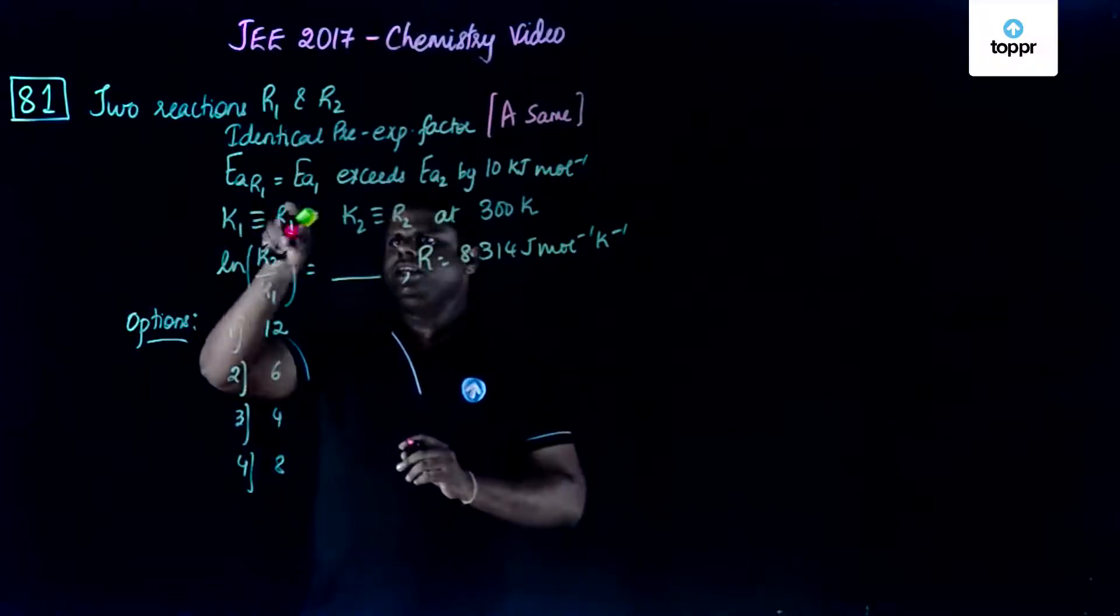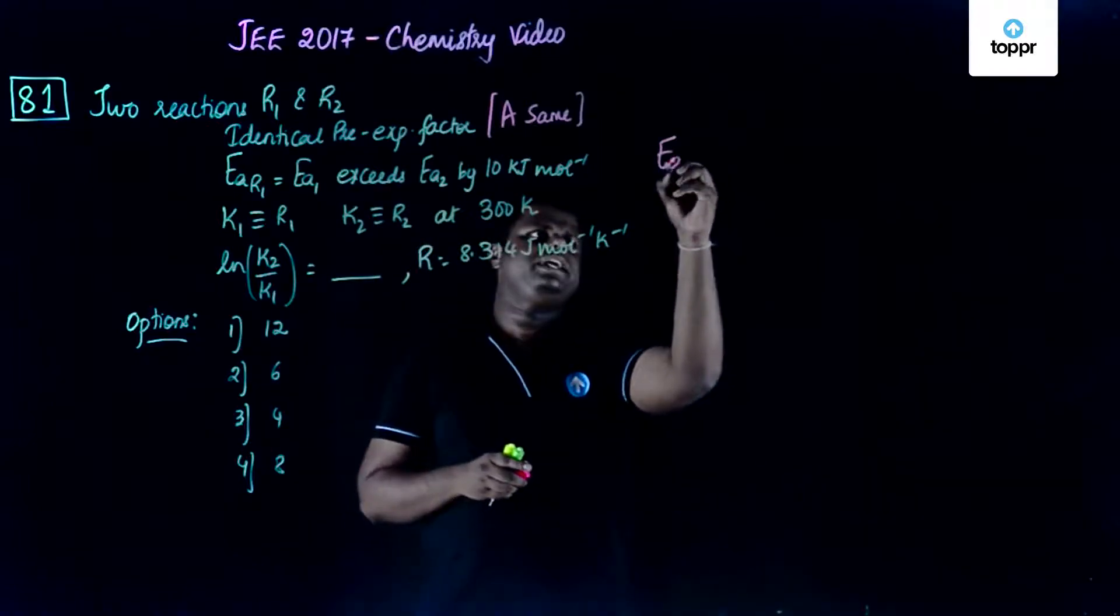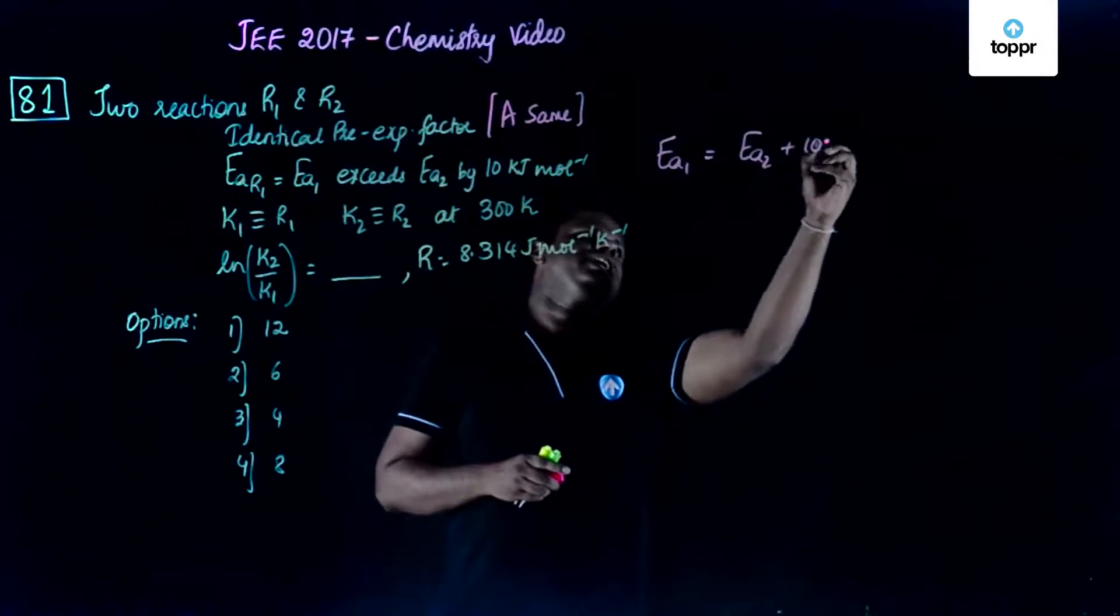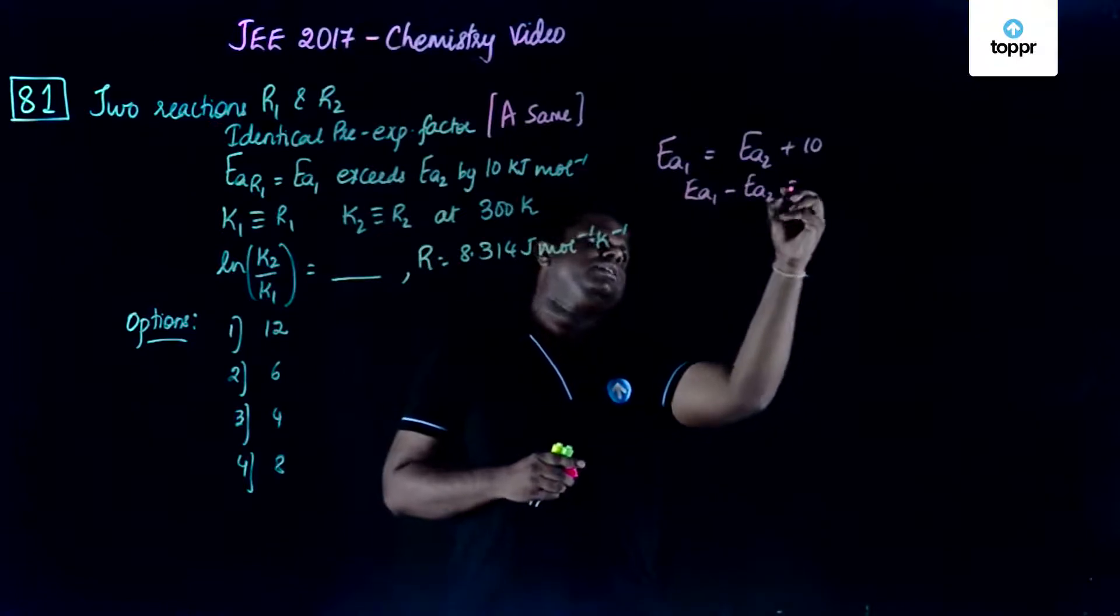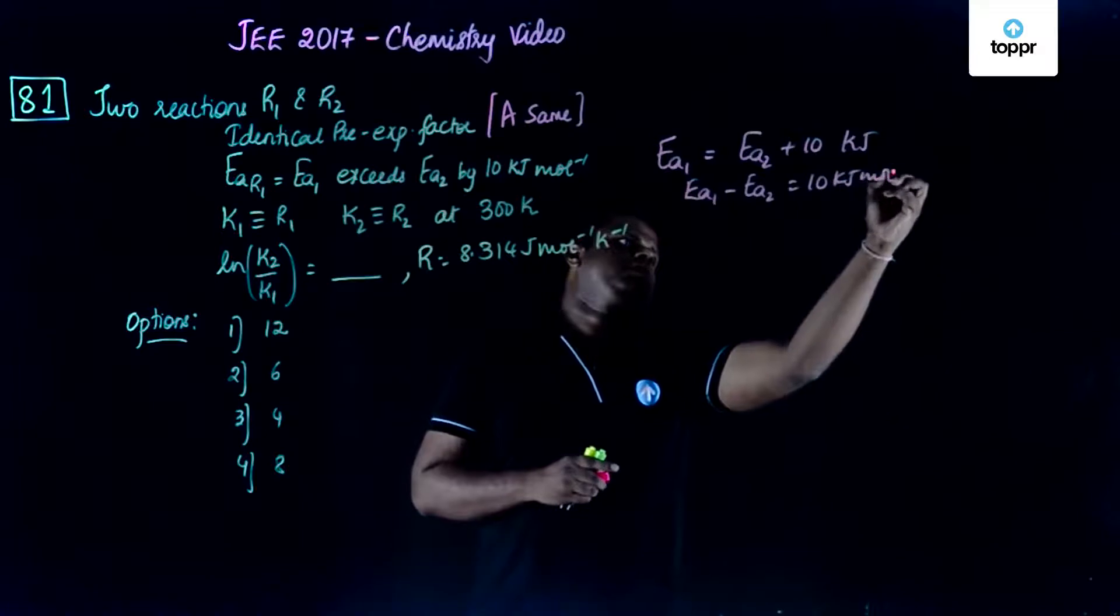Next, Ea1 exceeds Ea2 by 10. That means Ea1 is equal to Ea2 plus 10 kilojoules, so you can easily write Ea1 minus Ea2 is equal to 10 kilojoules per mole.